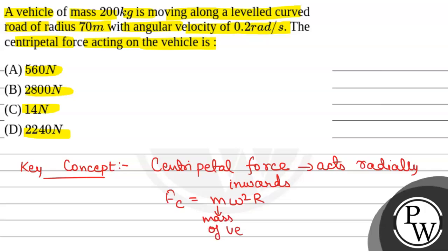Omega square is angular velocity of vehicle, and r is the radius of circular path in which the circular motion is taking place. Now,